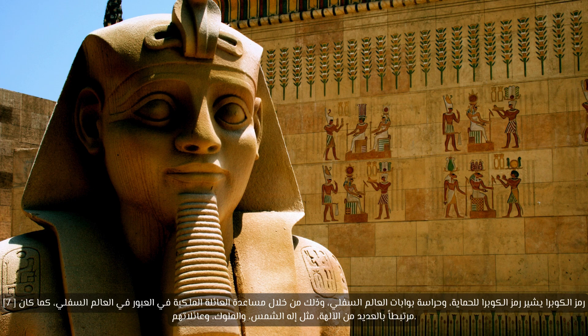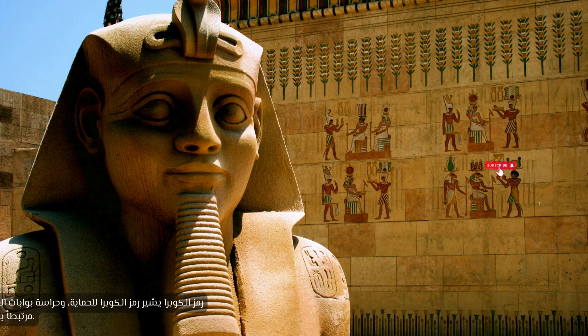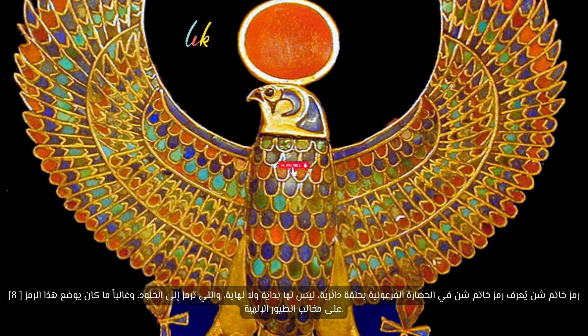Seven: the cobra symbol. The cobra symbol refers to protection and guarding the gates of the underworld, helping the royal family cross into the underworld. It was also associated with many gods, such as the sun god, kings, and their families.